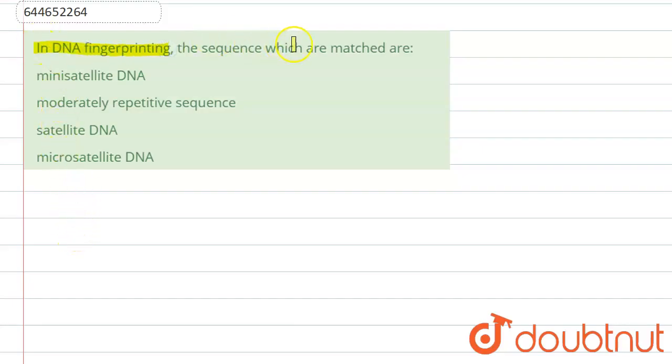In DNA fingerprinting, the sequences which are matched. Option A: minisatellite DNA. B: moderately repetitive sequence. D: satellite DNA. And E: microsatellite. What happens if we talk about the minisatellite?